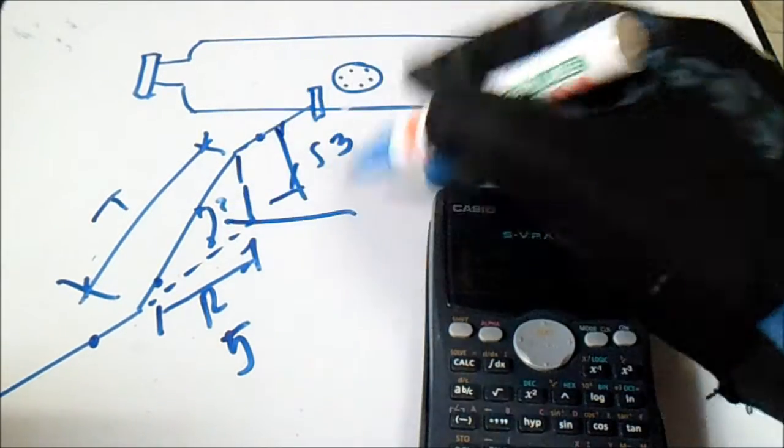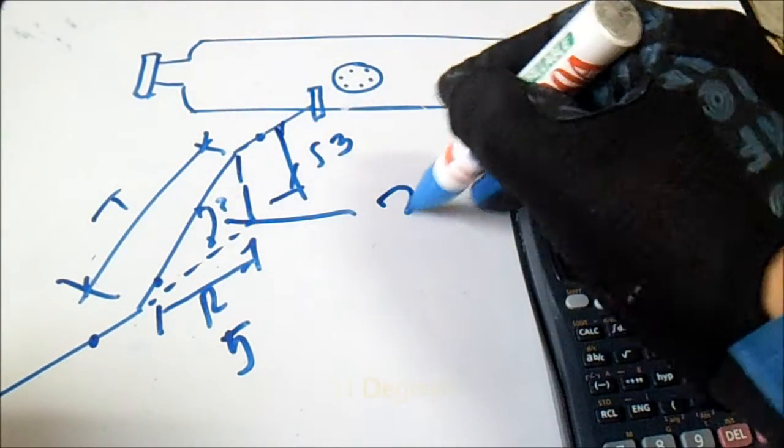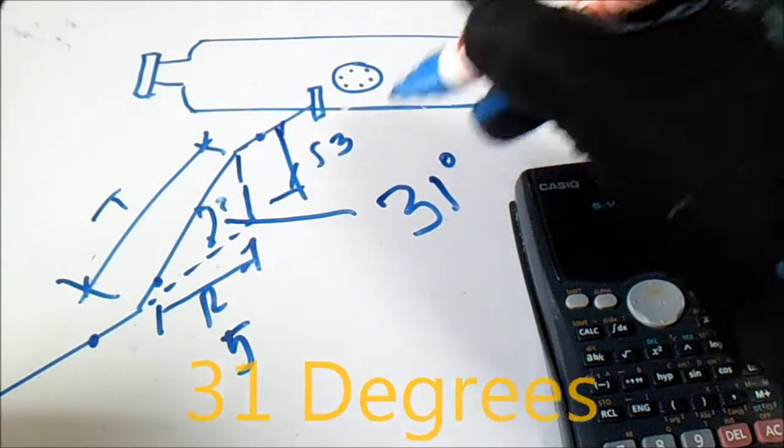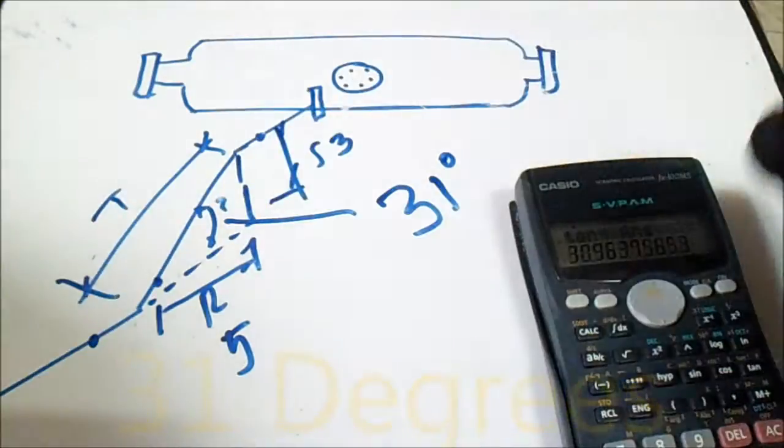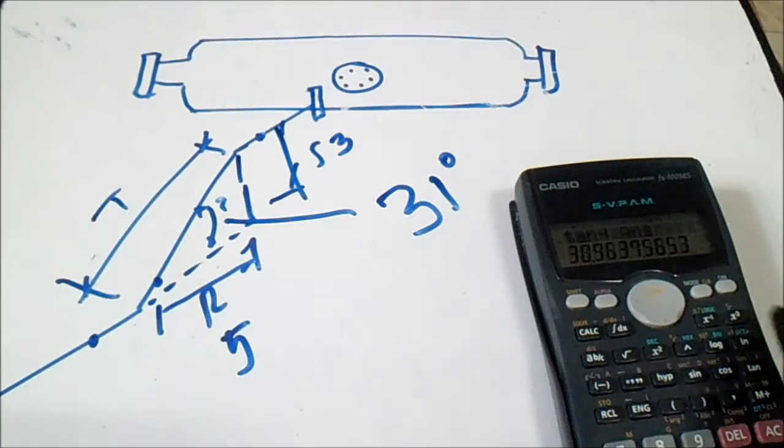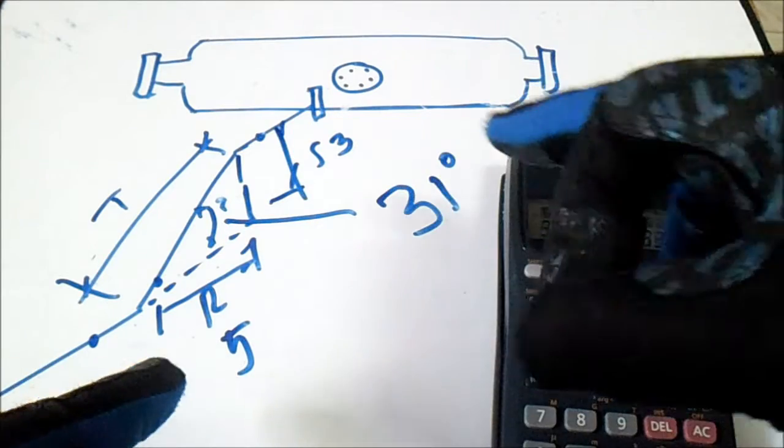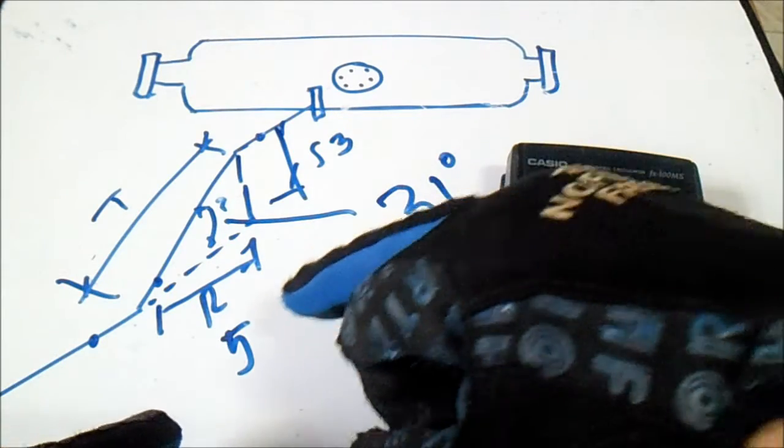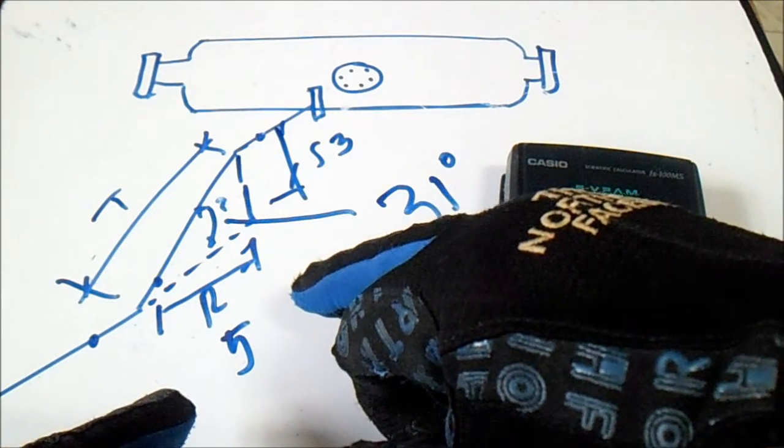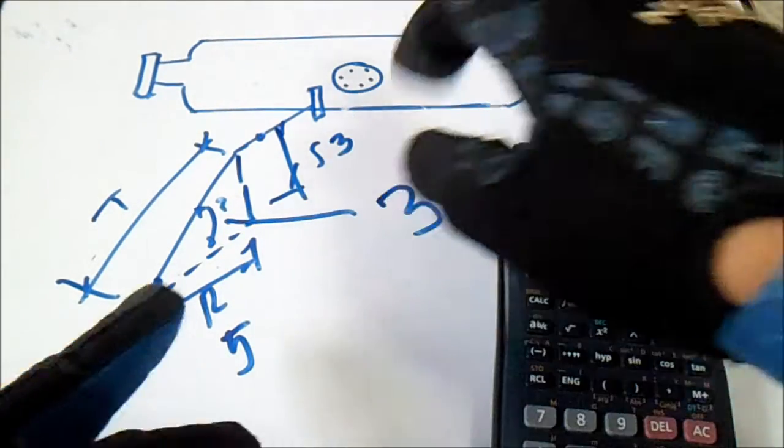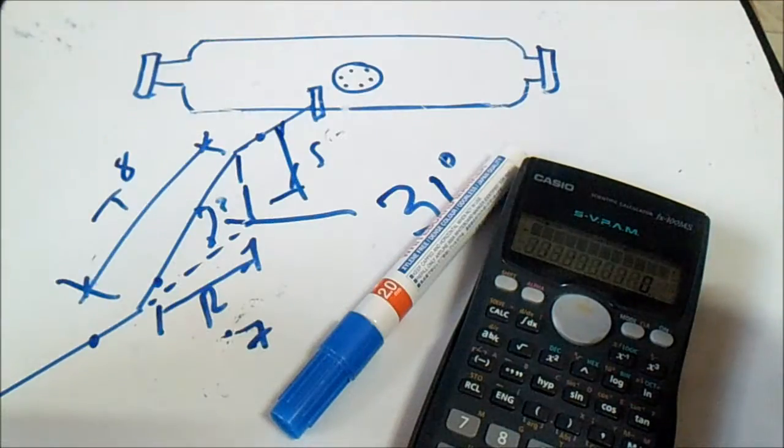31 degrees. So this is how to compute the degrees when we have a known run and set. Thanks for watching guys and have a nice day, bye.